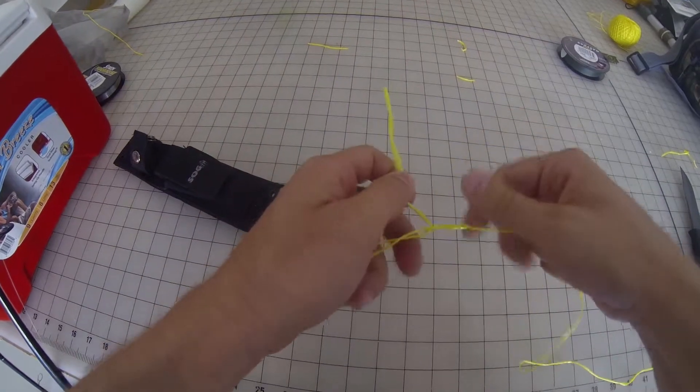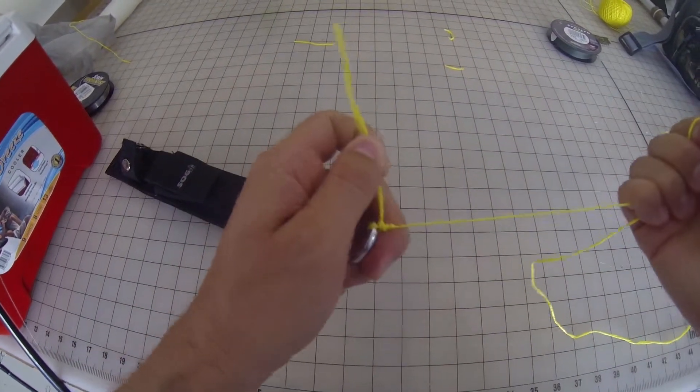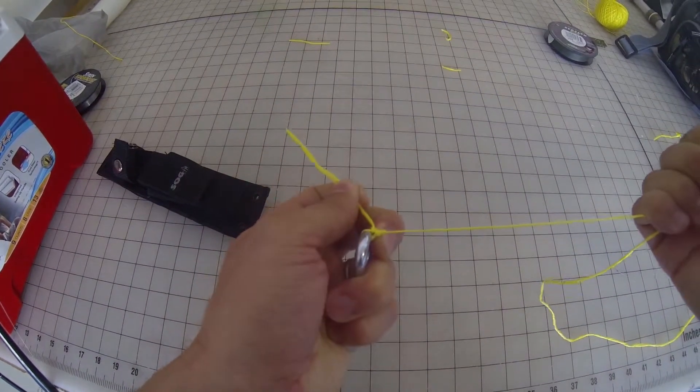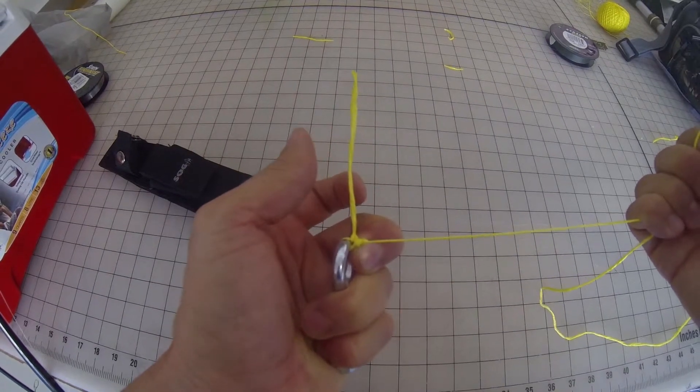Pull the tag, hold that, now I'm going to pull the main line and there you have the improved clinch knot.